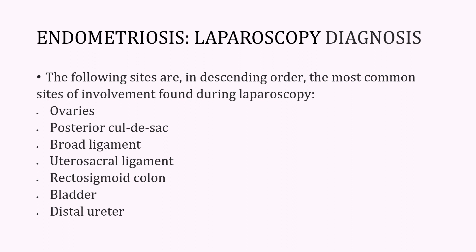The most common sites of involvement found during laparoscopy are the ovaries, the posterior cul-de-sac or pouch of Douglas, the broad ligament — usually in its posterior aspect — the uterosacral ligaments (a very common site), the rectosigmoid colon, the bladder, and the distal ureter. Generally the distal ureter is not easily seen in routine laparoscopies, and higher expertise is needed to visualize the entire ureter and assess whether it is free of disease or involved by endometriosis.